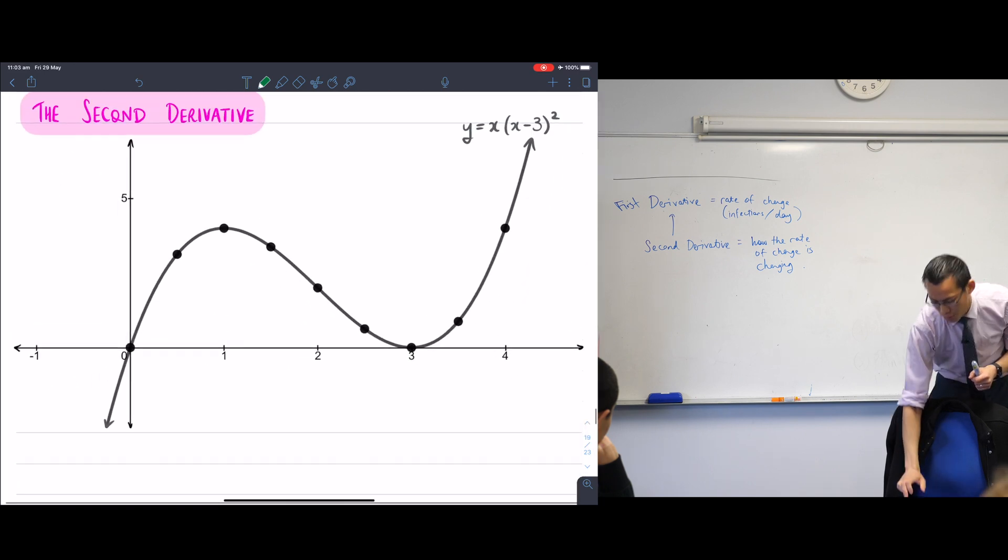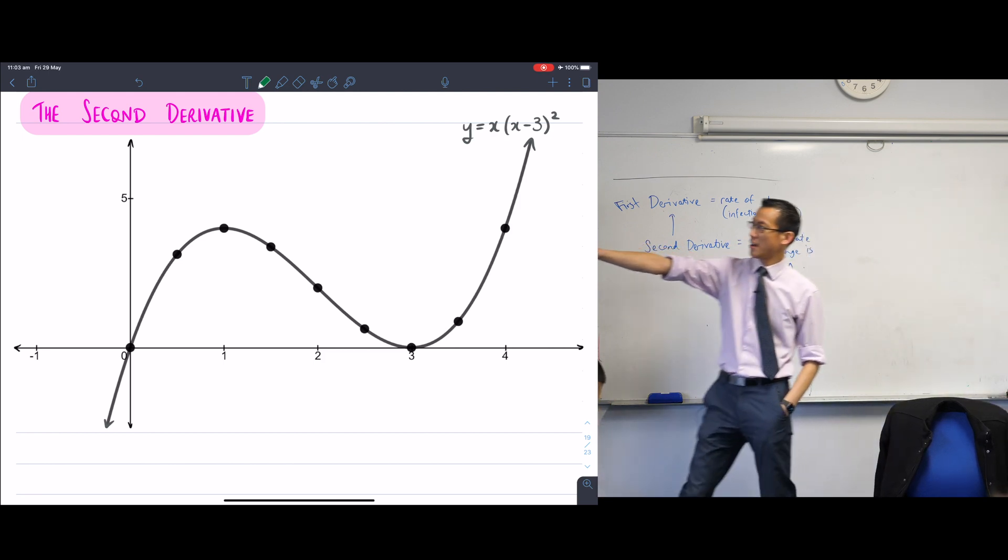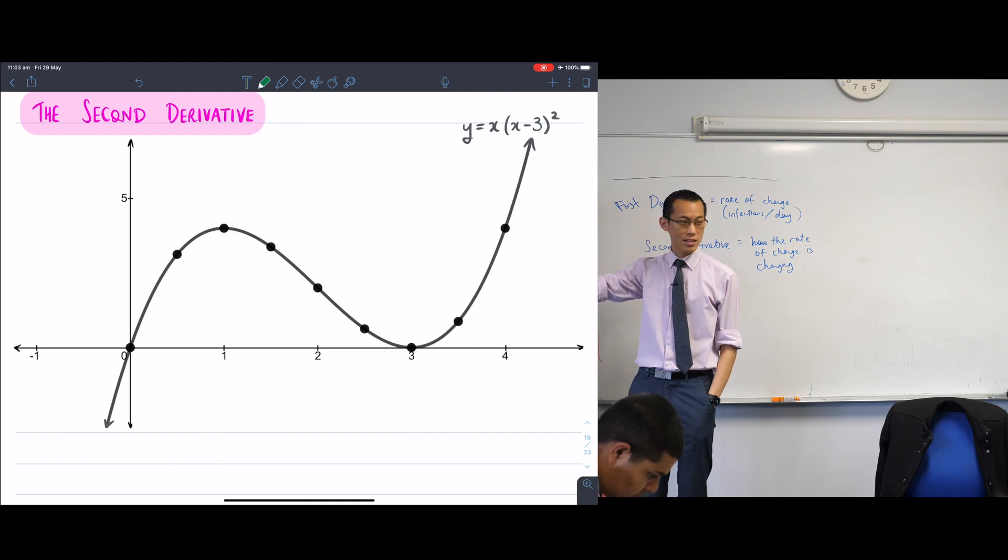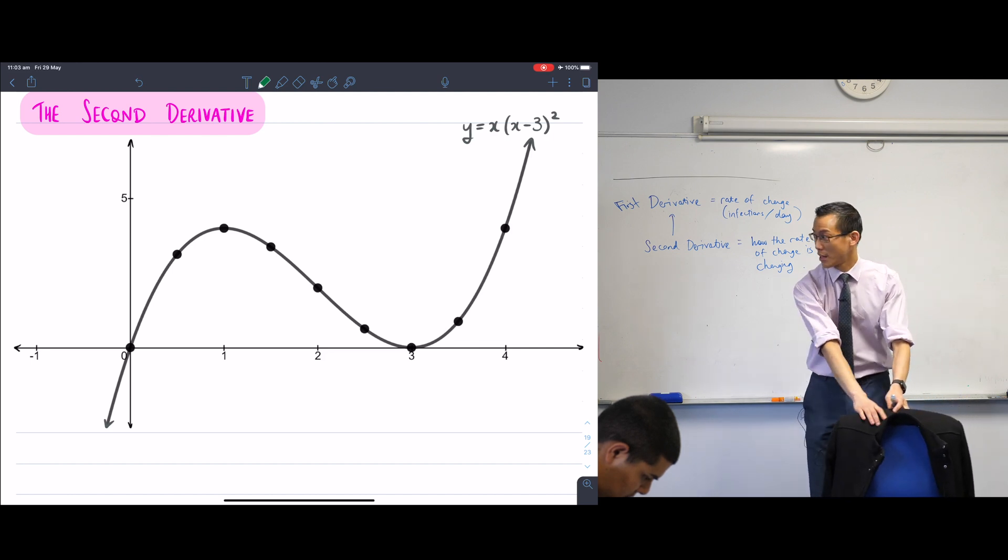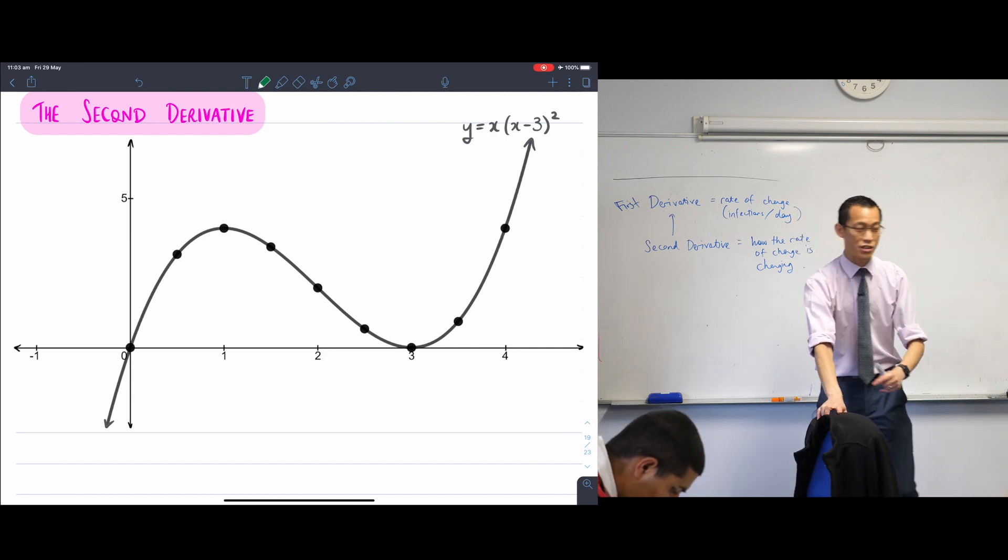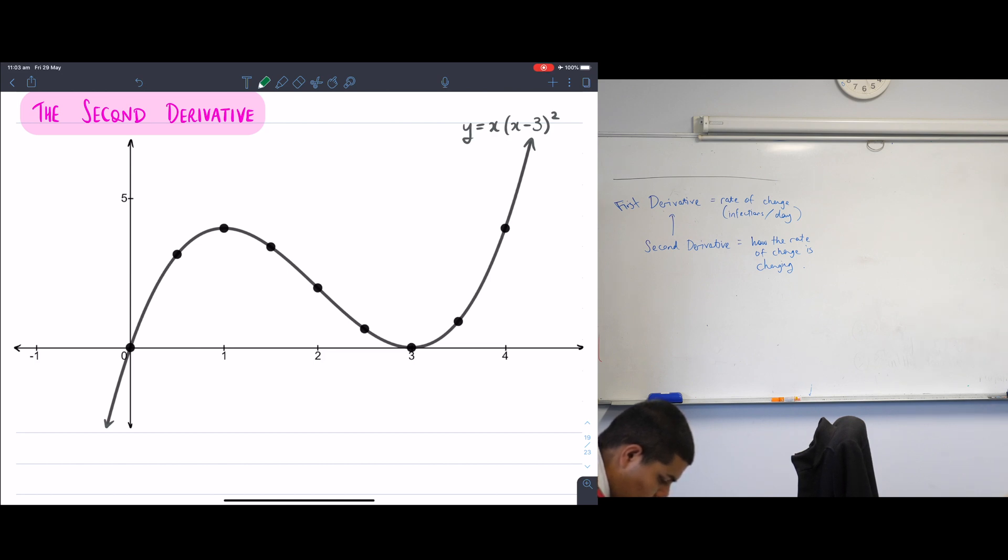I would like you to graph, again, just roughly, this guy here. I would normally ask you to graph it. I would say, there's the equation right there, y equals x times x minus 3 all squared. But actually that would take too much time. So I'm just handing the graph to you because I'm nice and gracious like that. So here's the graph. You will need the equation though, because in a second we're going to differentiate this and work with it.